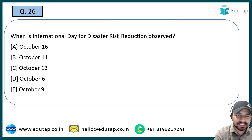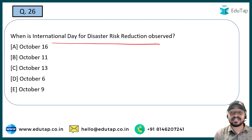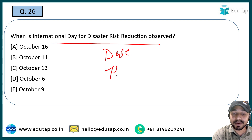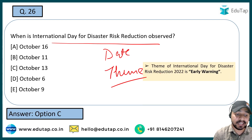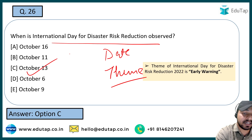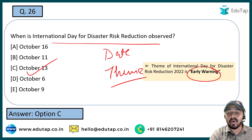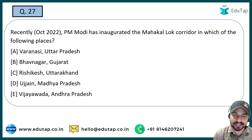The next question: International Day for Disaster Risk Reduction — important days require you to remember the date and theme. The date is basically 13th October. The theme for 2022 is Early Warning for All. You should remember these details for the exam.